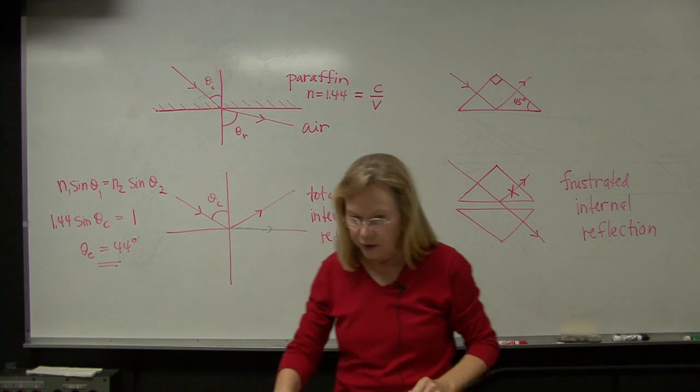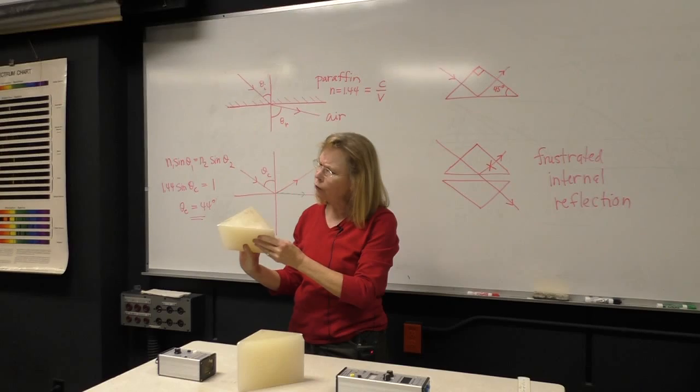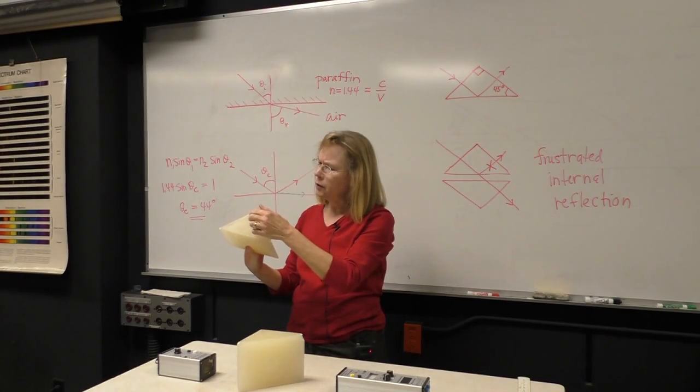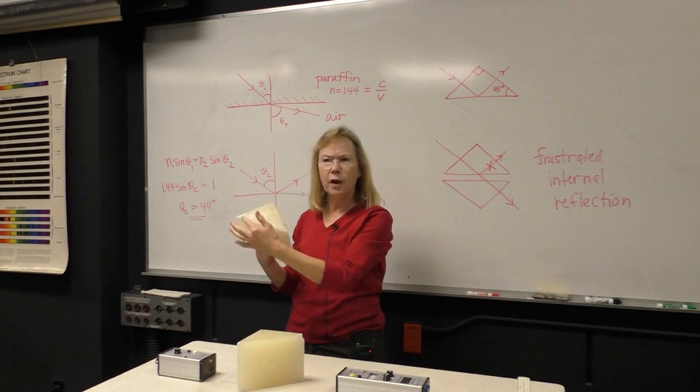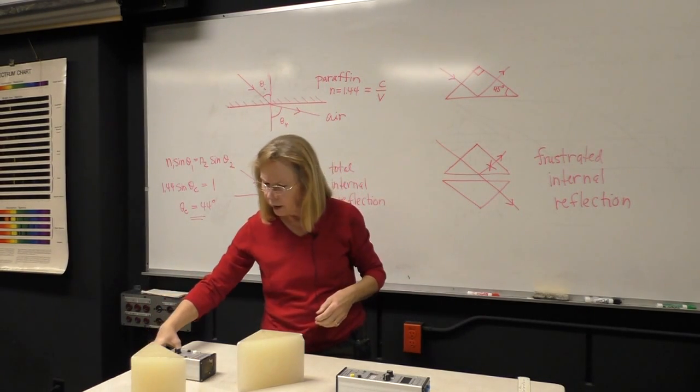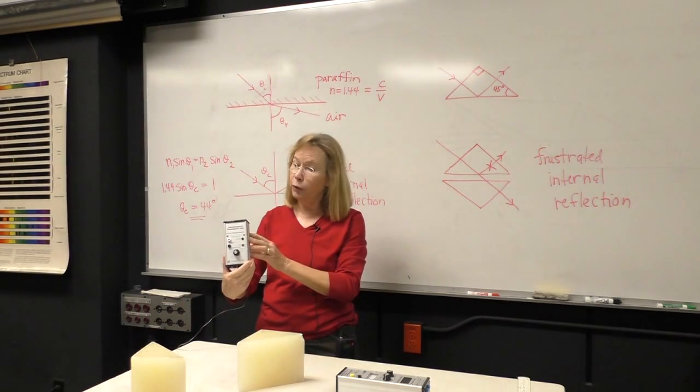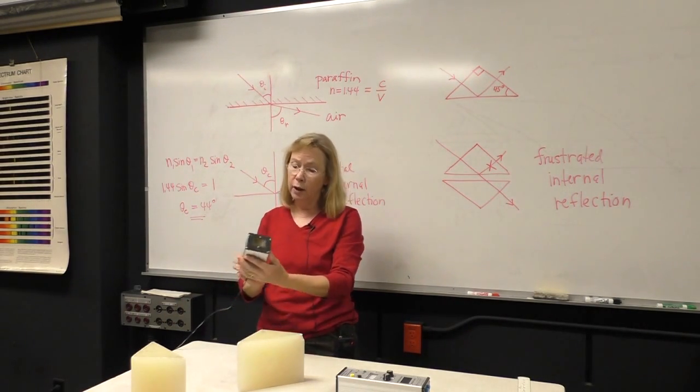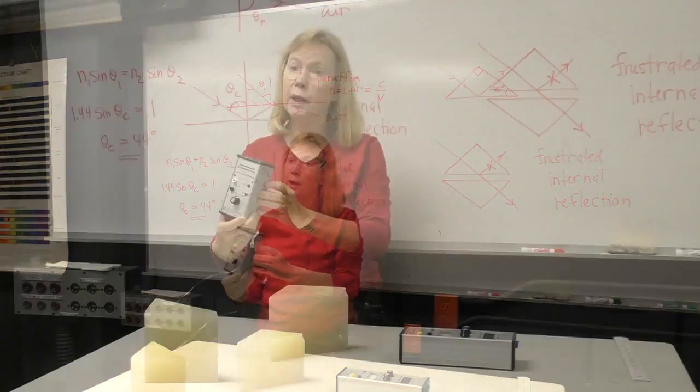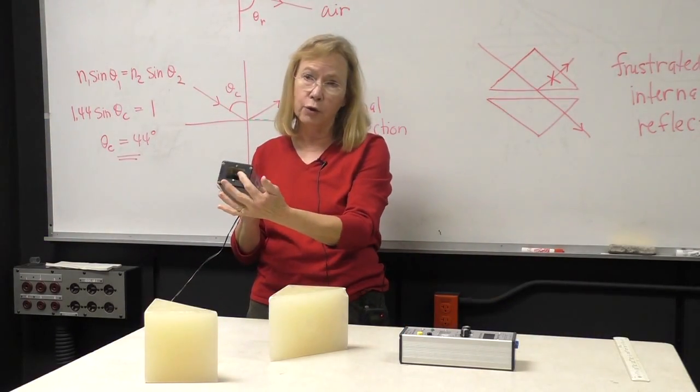So this is the setup. I have paraffin prisms. And these are right isosceles triangles. Two prisms. And I'm producing the electromagnetic wave with this microwave transmitter. It has a wavelength of 2.8 centimeters. And you can see that it's got a horn transmitter.